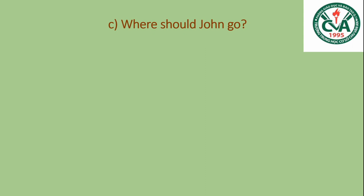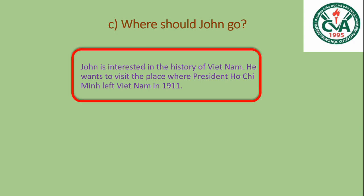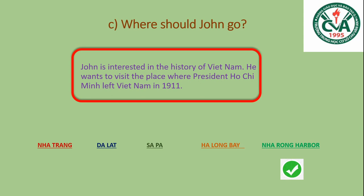Where should John go? John is interested in the history of Vietnam. He wants to visit the place where President Hồ Chí Minh left Vietnam in 1911. John rất quan tâm đến lịch sử của Việt Nam. Anh ta muốn thăm cái nơi mà Chủ tịch Hồ Chí Minh đã rời khỏi Việt Nam vào năm 1911. Như vậy anh ta nên đi đâu? Đúng rồi - Nhà Rồng Harbor là nơi mà Bác Hồ ra đi tìm đường cứu nước vào năm 1911.